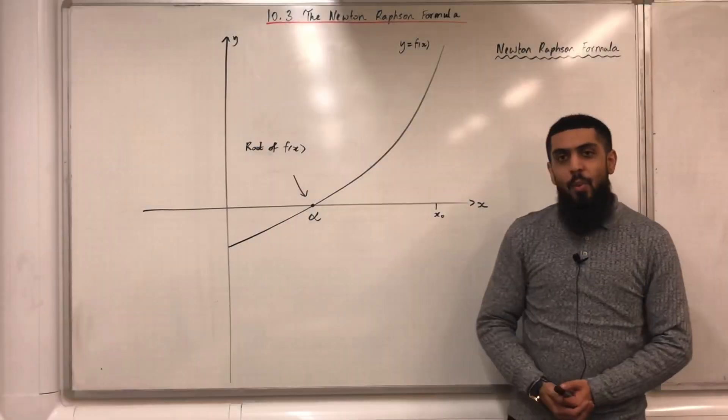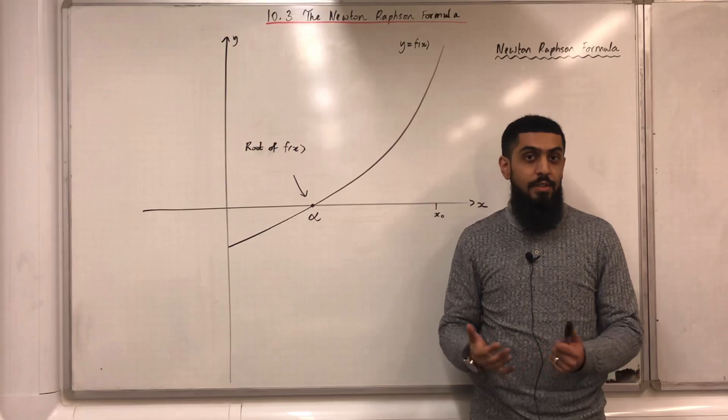Welcome back. In this video, I'll be looking at 10.3, the Newton-Raphson formula. 10.3 represents chapter 10, section 3 of the Pearson A level mathematics pure 2 textbook.